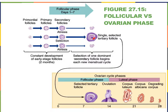Notice that the secondary oocyte that's about to be ovulated sits kind of off on a stalk, which is very typical for that follicle. The follicular phase corresponds to the maturation of our follicles into that Graafian follicle. A secondary oocyte is released during ovulation by that Graafian follicle, and that is immediately followed by the formation of the corpus luteum during the luteal phase. Some of these granulosa cells stay behind and help form the corpus luteum, along with some of the theca cells as well.